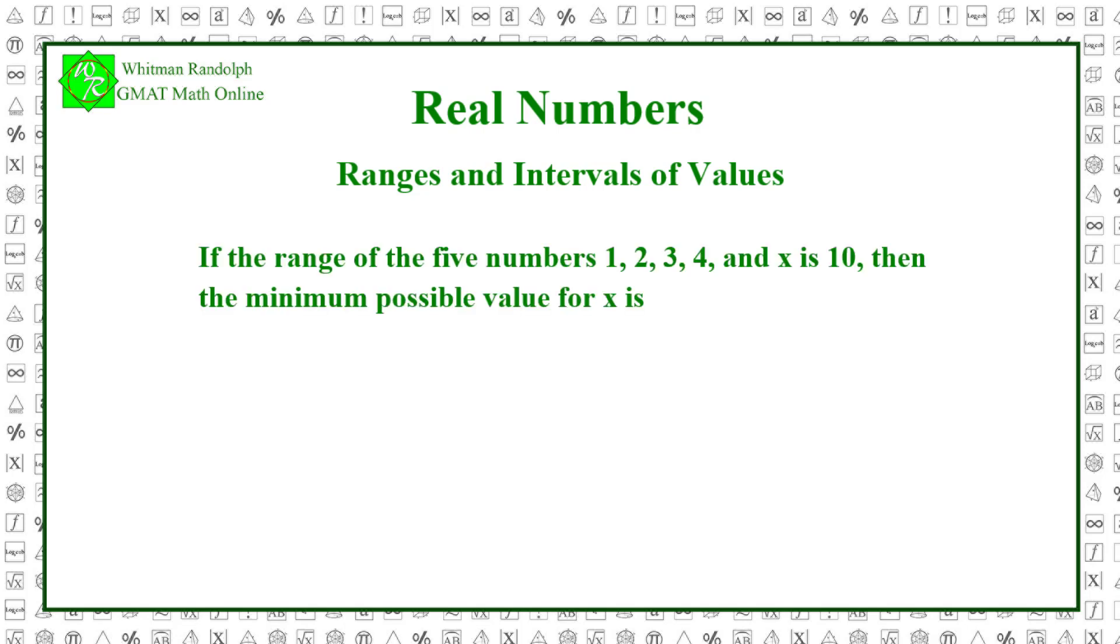Problem: If the range of the five numbers 1, 2, 3, 4, and x is 10, then the minimum possible value for x is... And here are some possible answers. Let's find the solution.